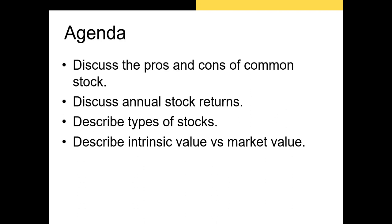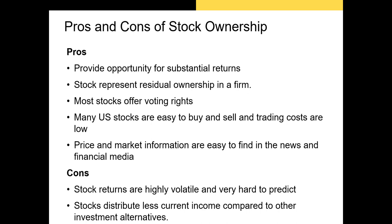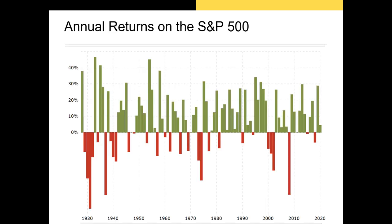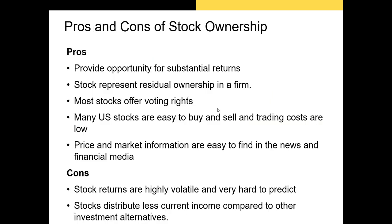There are many benefits to owning common stock. First, stocks historically outperform bonds by a significant amount. This is a chart of the annualized returns of the S&P 500. As you can see, during most years since 1930 the S&P 500 return has been fairly high. On average, the return on the S&P 500 has been about 8 to 10 percent depending on the time period, and in most years there is a positive return.